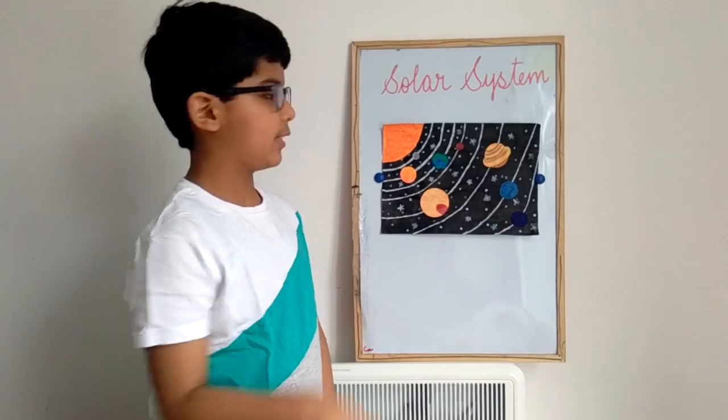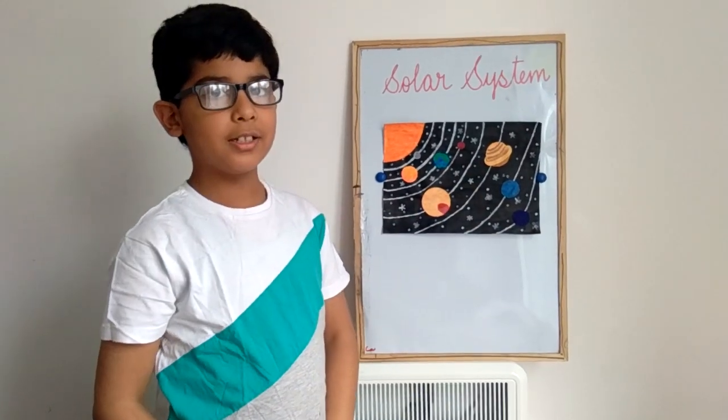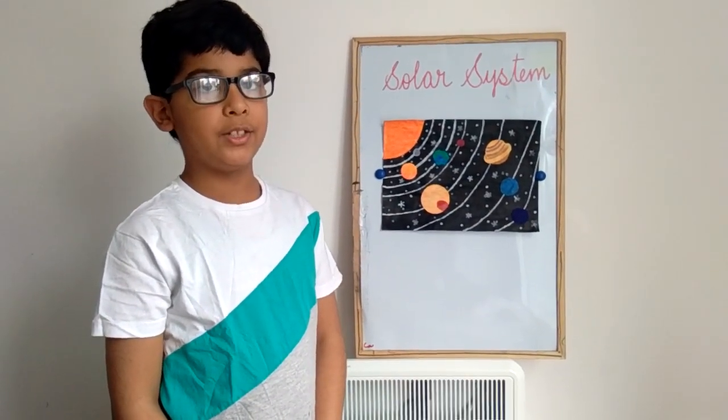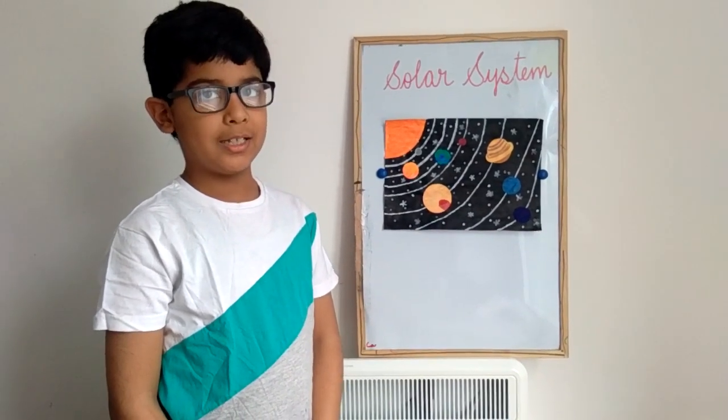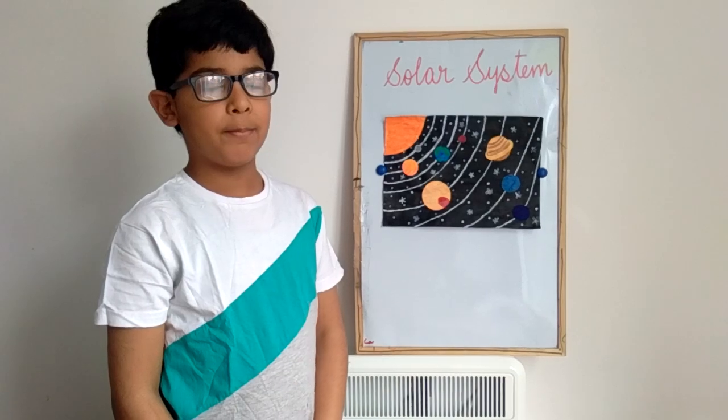The next planet is Saturn. Saturn has 82 moons. It is famous for its rings. It has so many gases mixed in it.